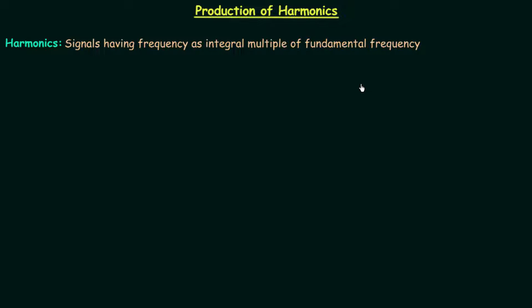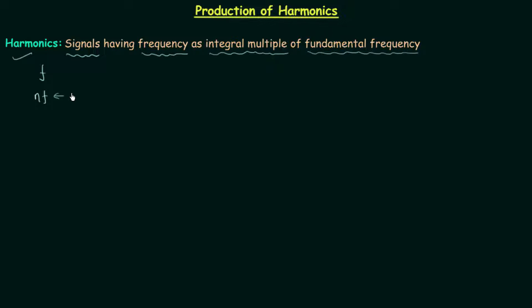In this lecture we will talk about harmonics and we will also find whether they are produced in LTI systems or not. Harmonics are signals having the frequency as an integral multiple of the fundamental frequency. So whenever a signal's frequency is an integral multiple of the fundamental frequency, that signal is known as a harmonic. For example, if f is the fundamental frequency then nf is the frequency of the harmonic, where n can be equal to 2, 3, 4 and so on.